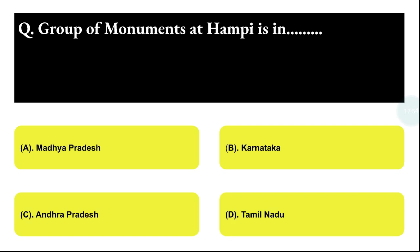Next question: the group of monuments at Hampi is located in which state? Option A: Madhya Pradesh, Option B: Karnataka, Option C: Andhra Pradesh, Option D: Tamil Nadu. The correct answer is option B, Karnataka.